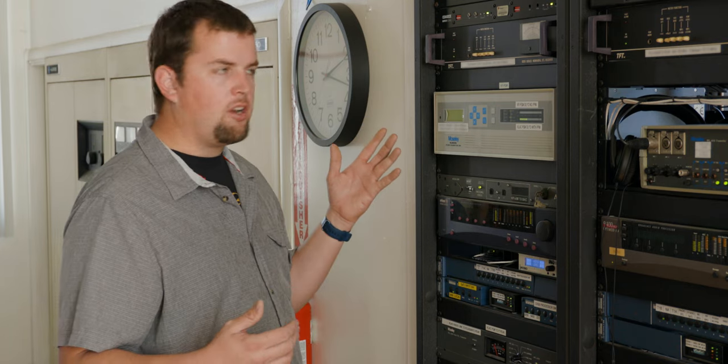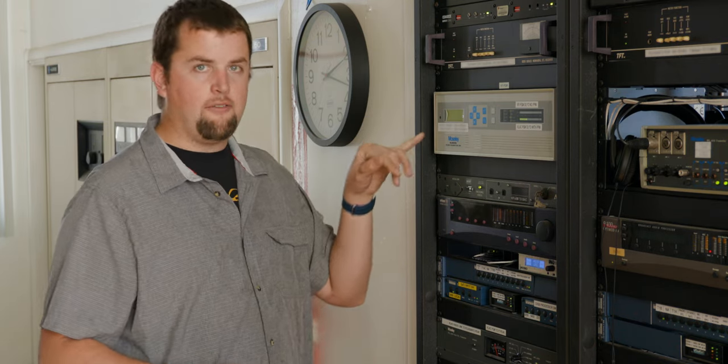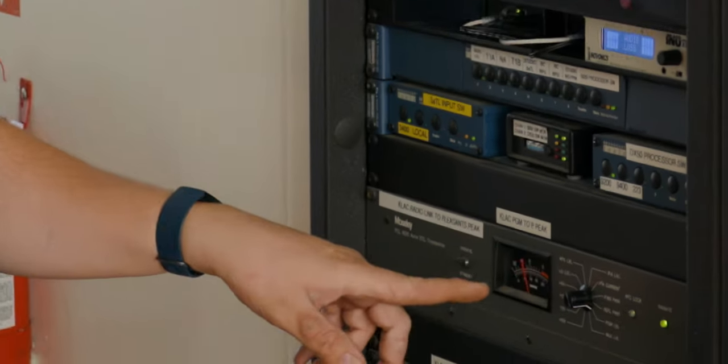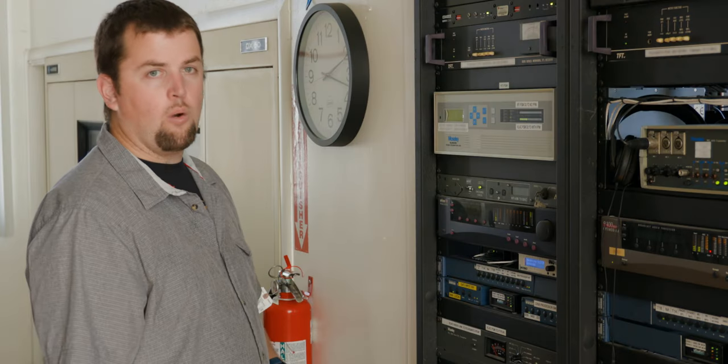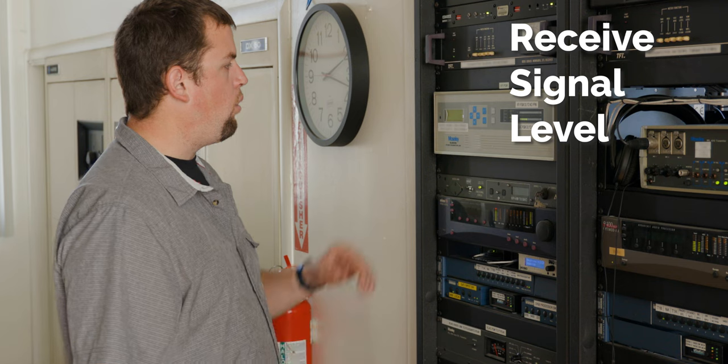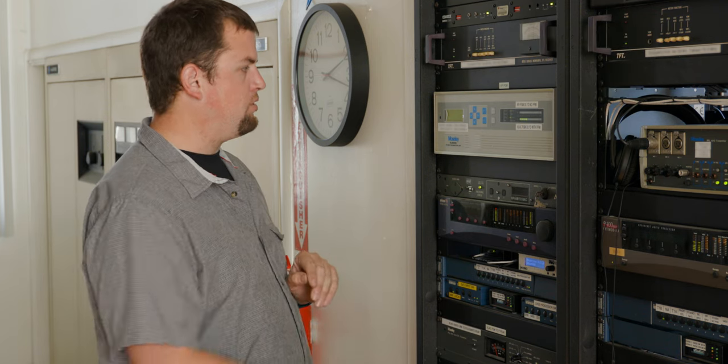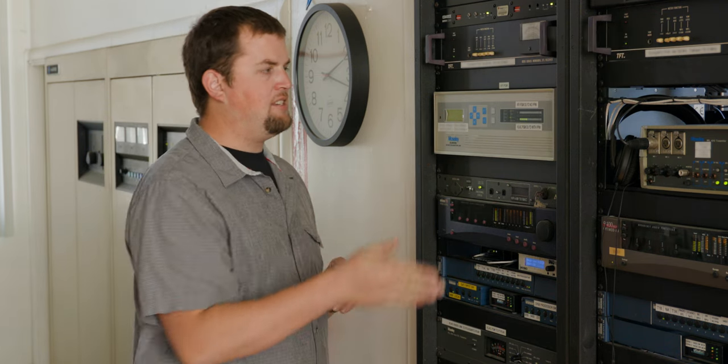The main things as an operator you're going to want to take note of is signal level. That could either be done on a meter like this one, moving the knob to your received signal level or just reading off the front panel. On a Mosley, we would read it in dBm.